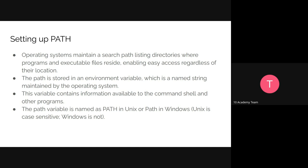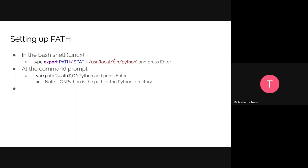Now, setting up the PATH. We want our machine to find the Python we just installed. Our operating system maintains a search path by listing directories where executables reside, making it easy to access them regardless of their location. Where you store your environment variable is crucial — we have to specify where we've installed Python. We've provided shell code that you can copy and paste into your machine to set up the PATH.